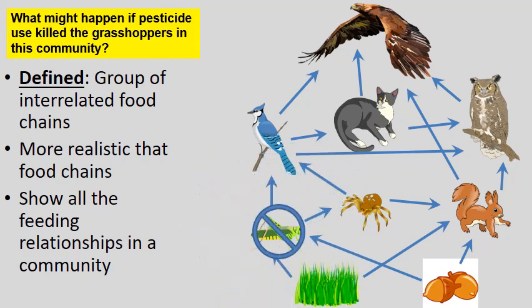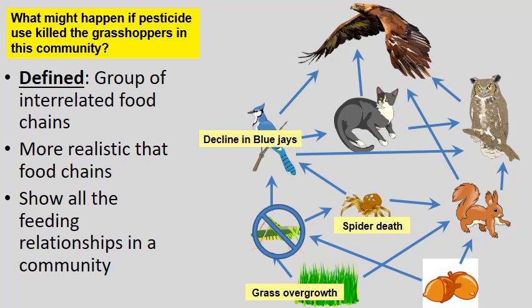Consider what might happen if a pesticide killed all the grasshoppers in a community. You might see grass overgrowth since there are no more grasshoppers to keep it under control. Spiders would slowly die having lost their food source. Blue jays would decline since they fed on grasshoppers and spiders. Hawks might have to hunt more squirrels as blue jays decline. This shows how everything fits neatly within a community — life exists in balance within the food web. Adding or removing organisms disrupts that balance.